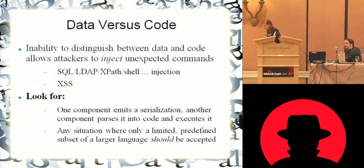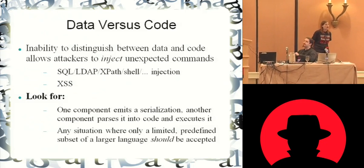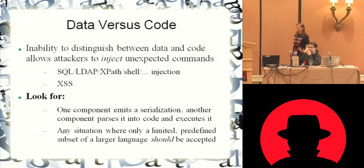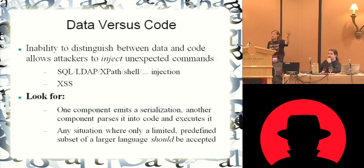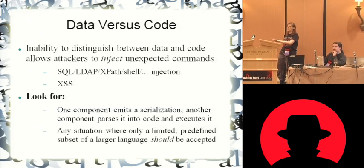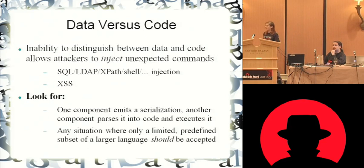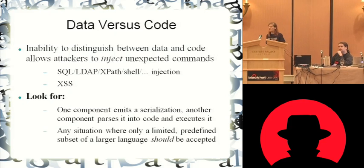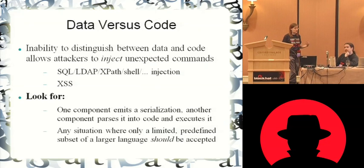So what you want to look for when you are auditing a system to find these potential points of weakness is any point where you've got one component emitting a serialization — taking data that's in some binary format and moving it onto the wire or into a text file, moving it into some kind of marshalling format for something else to pick up and either use as data or use as code. If it's going to get parsed, and if the component doing the parsing has the ability to execute things based on what it's parsing, this can be a big problem.